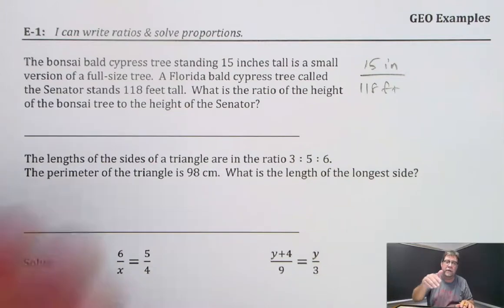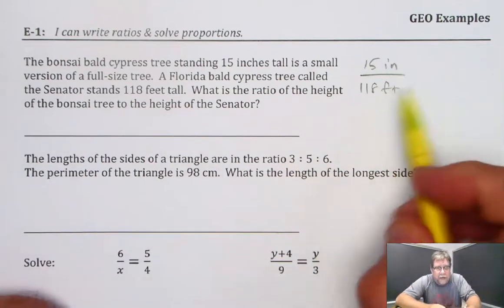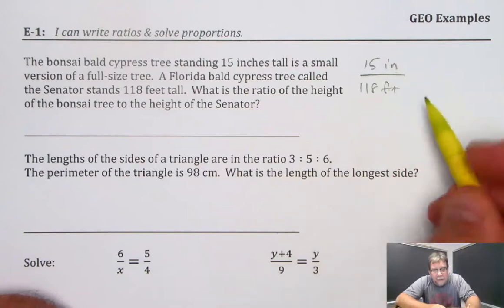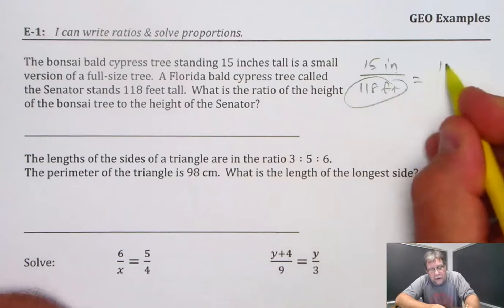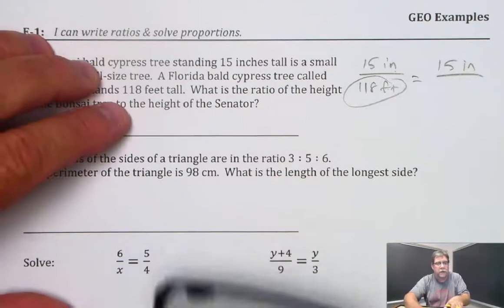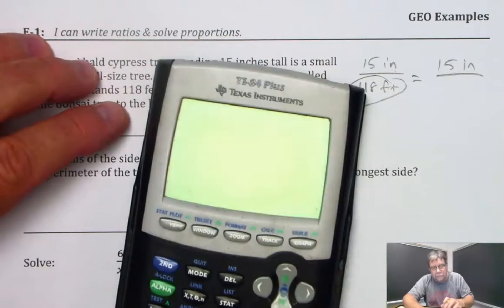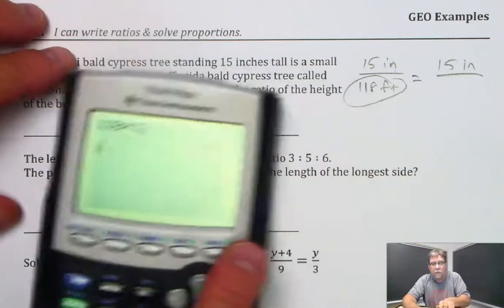I cannot use this ratio because the units aren't the same. I need the units to be the same. So let's go ahead and change that into inches. We're going to leave 15 inches up here. We're going to take our 118 feet and multiply it by 12 inches to change feet into inches. And that's 1416.